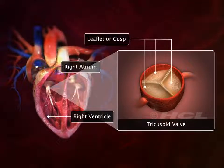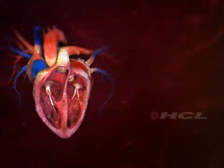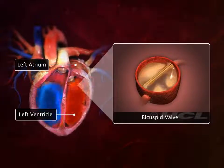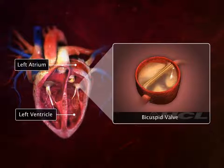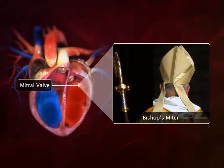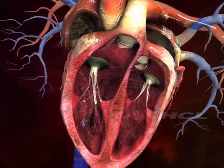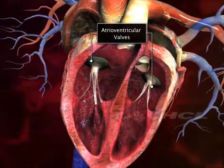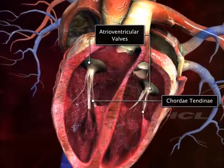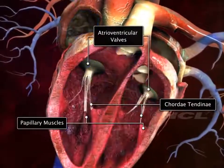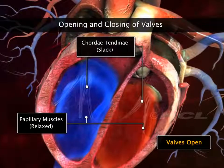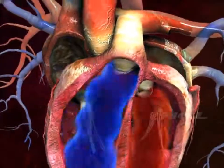On the other side, the left atrium and ventricle are connected through a bicuspid valve. The bicuspid valve is also called the mitral valve because of its resemblance to a bishop's two-sided mitre or hat. The leaflets of these atrioventricular valves are connected to fibrous tissue called the chordae tendineae, which in turn are attached to papillary muscles. Contraction and relaxation of these muscles make the valves open and close.